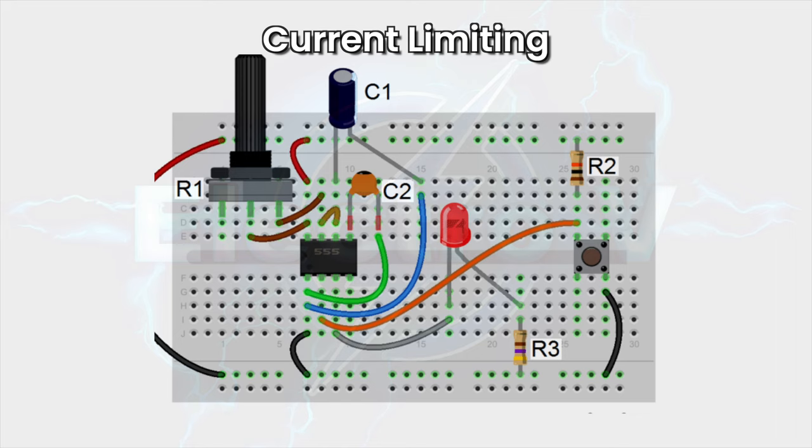Current limiting: resistors are often used to limit the current in a circuit, especially when driving LEDs or other sensitive components. A resistor in series with an LED can limit the current and prevent the LED from burning out.